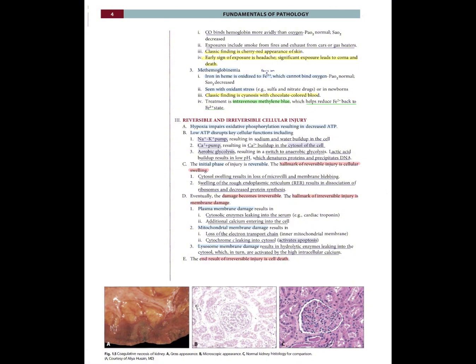On the bottom we have three figures: one is coagulative necrosis of the kidney (gross appearance), one is the microscopic appearance, and this is the normal kidney histology compared to the abnormal. Thank you guys, and if you want to read more of Pathoma with me, please watch my next video.